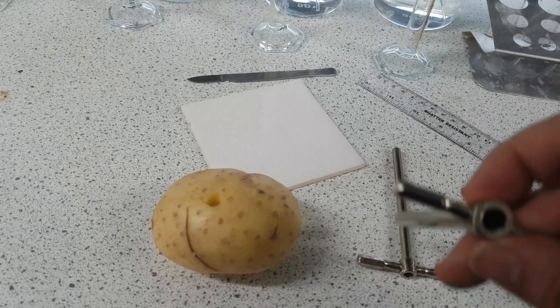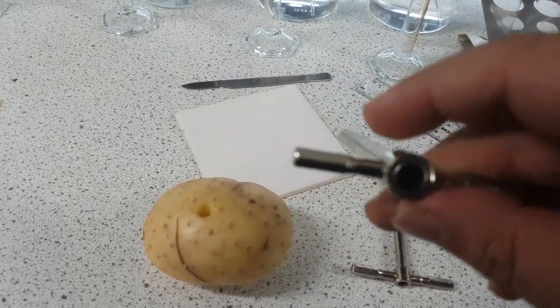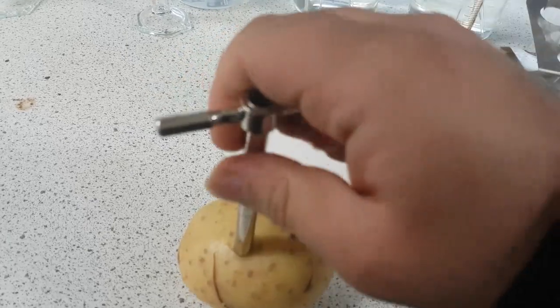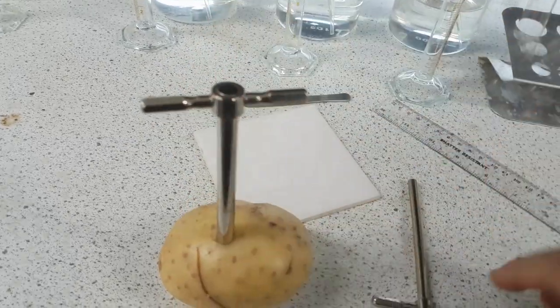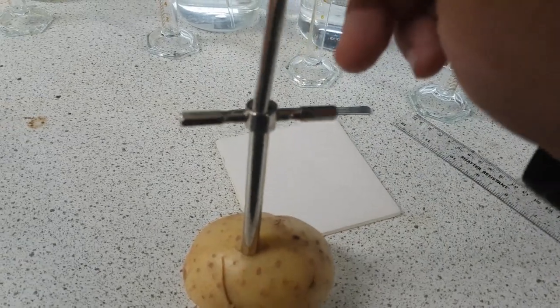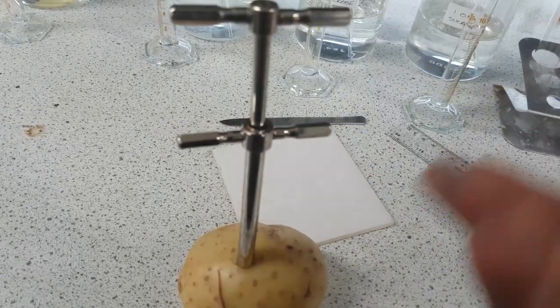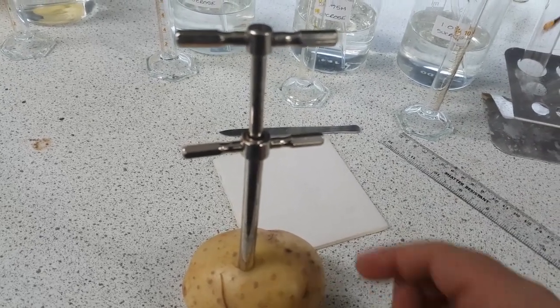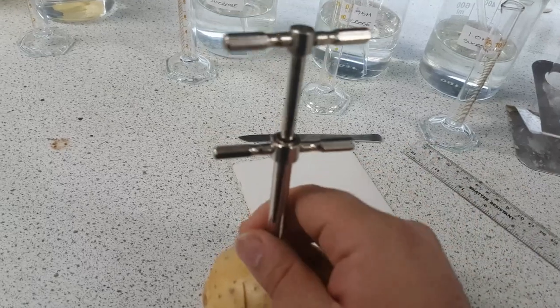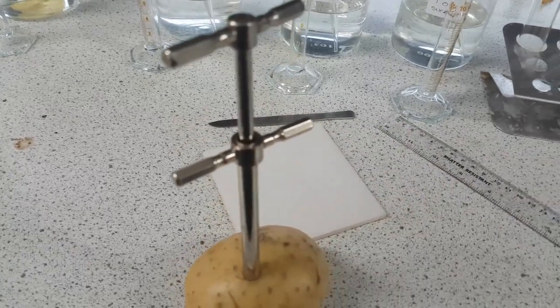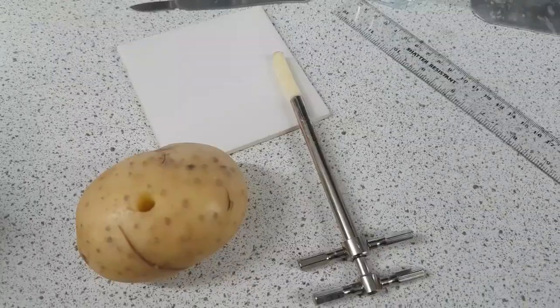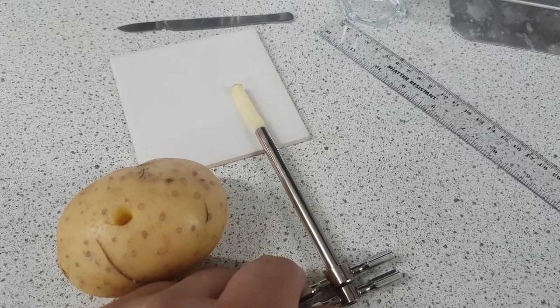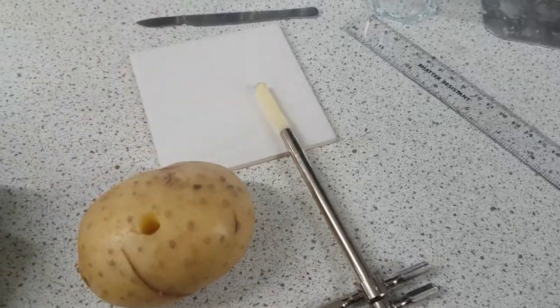And then what you're going to do is you're going to stick the other cork borer into this one and push it out. Just to demonstrate, I'm going to put that back in there so I can show you what I mean. I'm going to push this into here. Now I'm going to take them both out because otherwise the potato probably won't come out. And then I'm going to slide the cylinder of potato out. I've put in the smaller cork borer and it's pushed the cylinder of potato out.